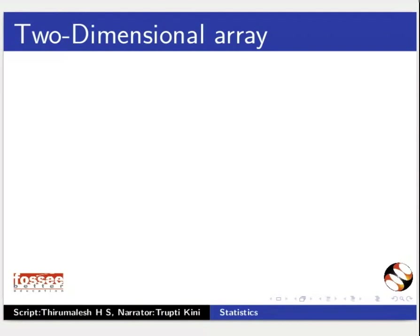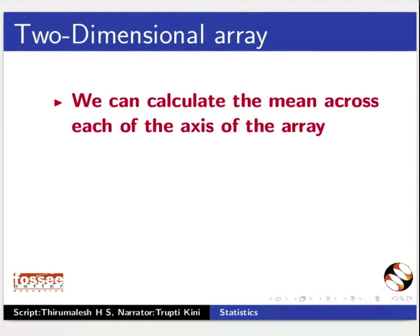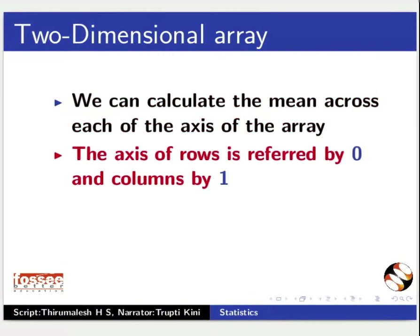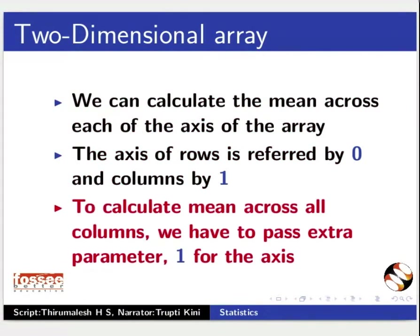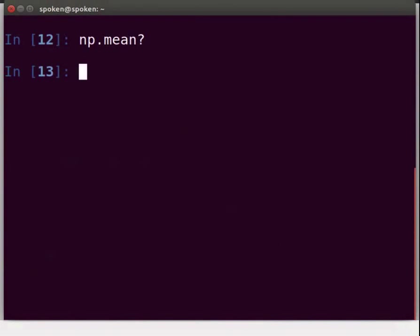L is a two-dimensional array like a matrix. We can calculate the mean across each of the axes of the array. The axis of rows is referred to by 0 and columns by 1. To calculate the mean across all columns, we have to pass the extra parameter 1 for the axis. Switch back to the terminal. Let us calculate the mean of the marks scored by all students for each subject. Type: np.mean(L, 0) and press Enter.